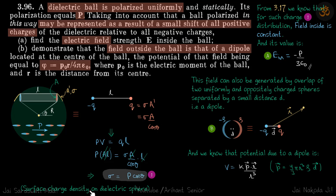So this is the surface charge density on the dielectric sphere which as we discussed is in the form of σ₀ cos θ. And in that case electric field inside is constant and its value is -P/(3ε₀).